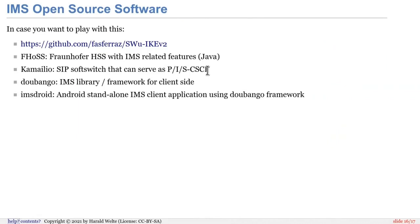On the core network side, there is FHOSS, which is an HSS implementing IMS-related features and procedures, developed in Java. There's Kamailio as a SIP soft switch that can serve as the PCSCF and SCSCF functions of an IMS core. There's a nice tutorial from Supreeth Herle on how to set up IMS with Open5GS using FHOSS and Kamailio as the IMS core network. On the client side, there's a library called Doubango — a portable C/C++ library implementing IMS client functionality — and there's an Android client using that library called IMSDroid, as well as iOS and Windows Mobile clients. All of those are open source.